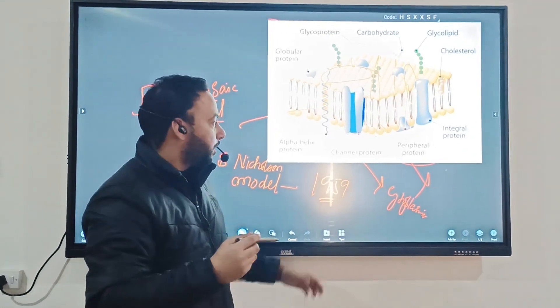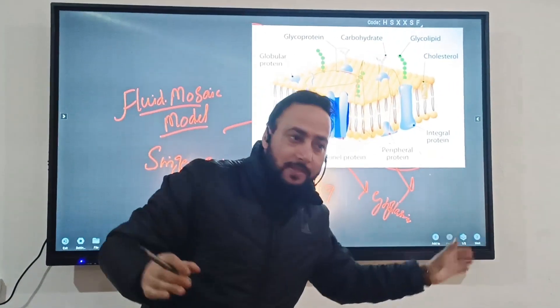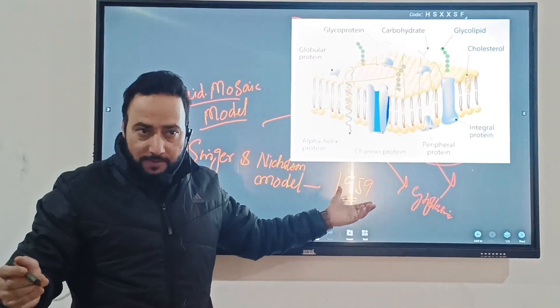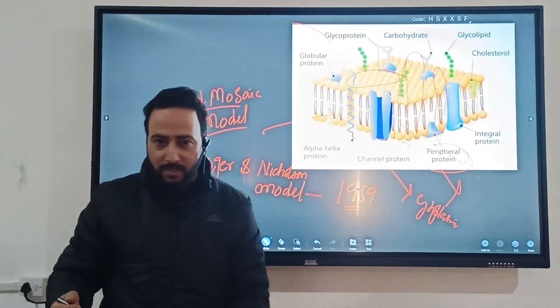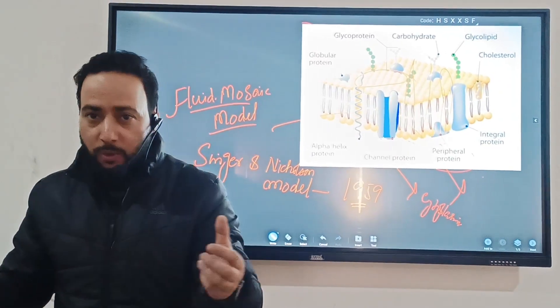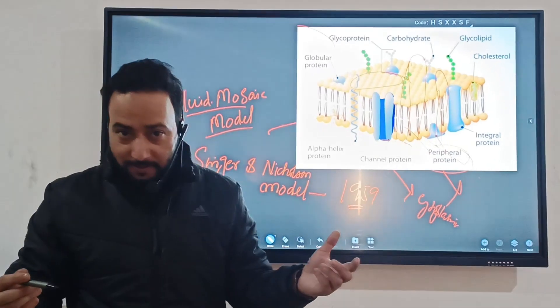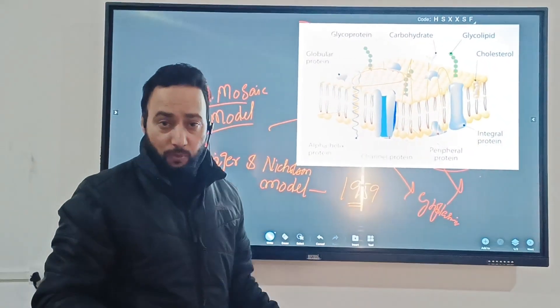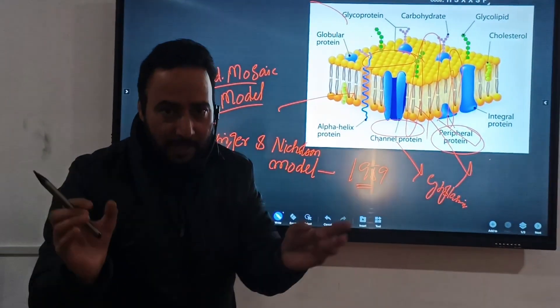When we come to the lipids, when we come to the distribution of lipids in the plasma membrane, most predominant is phospholipids, glycerophospholipids. One important phospholipid present in the plasma membrane is lecithin, that's known as phosphatidylcholine. You might be knowing that it's a lung surfactant. Dipalmitoyl lecithin acts as a lung surfactant. If it's absent in a newborn baby, it causes respiratory distress syndrome.